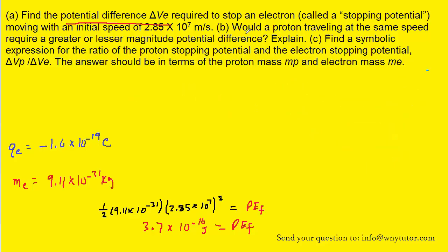For part B, it asks would a proton traveling at the same speed require a greater or lesser magnitude potential difference? And then explain.